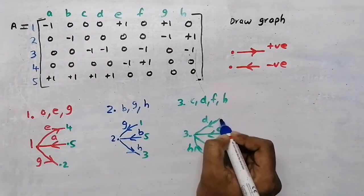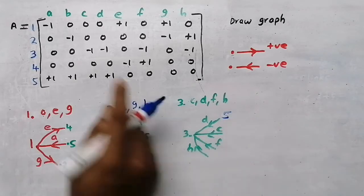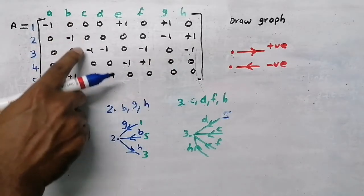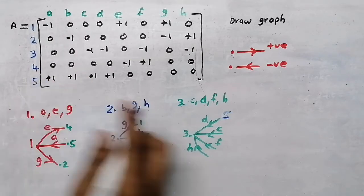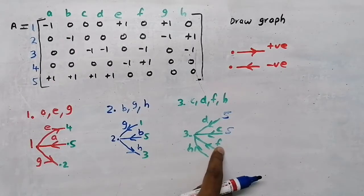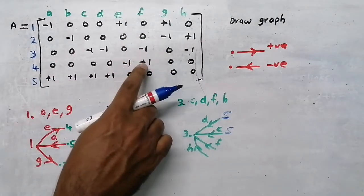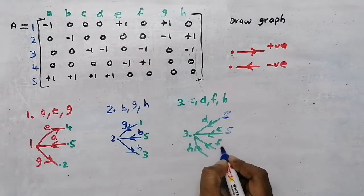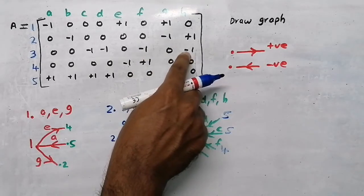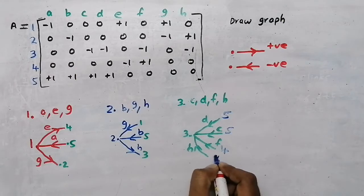Now we need to find the end points. Branch d: look at the column - minus one and plus one at node 5, so my endpoint will be at node 5. Branch c: the positive is at node 5. Branch f: minus one, plus one is at node 4, so the endpoint is at node 4. Branch h: minus one is here, plus one is at node 2.